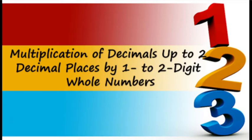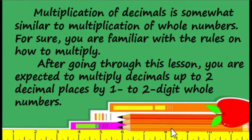Hi kids! Our lesson for today is multiplication of decimals up to two decimal places by one to two digit whole numbers. Multiplication of decimals is somewhat similar to multiplication of whole numbers. For sure you are familiar with the rules on how to multiply. After going through this lesson, you are expected to multiply decimals up to two decimal places by one to two digit whole numbers.